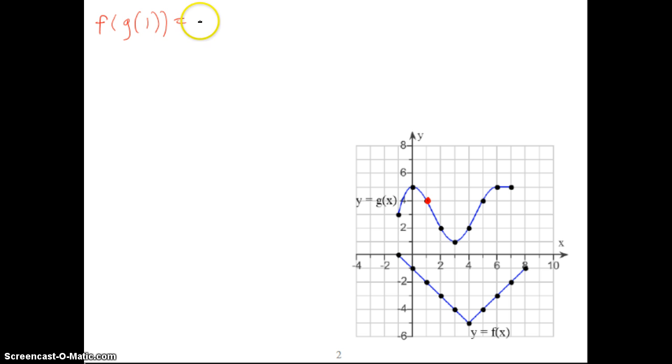Okay, so we know that g of 1 is 4. Now, we want to find f of 4. So, f of 4 is going to be on the f of x function. f of 4 is right here, which is negative 5. So, we know that f of g of 1 is negative 5.